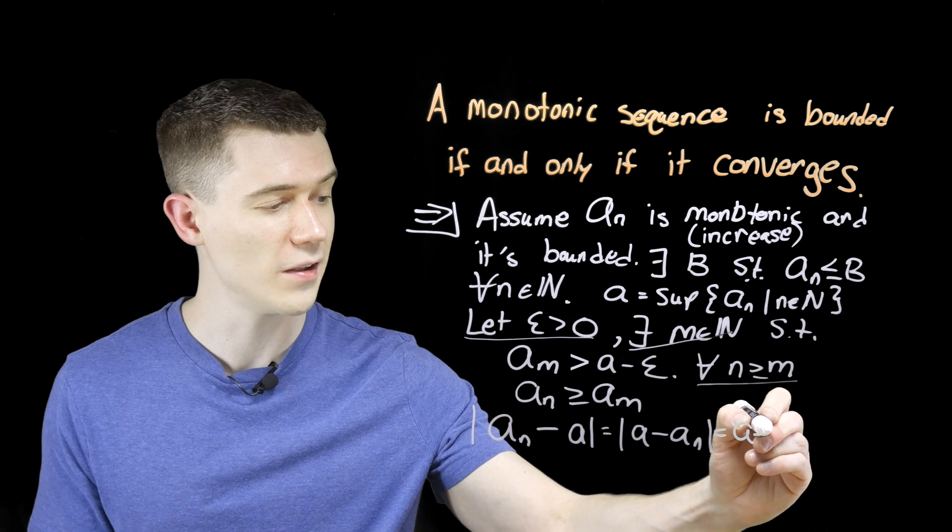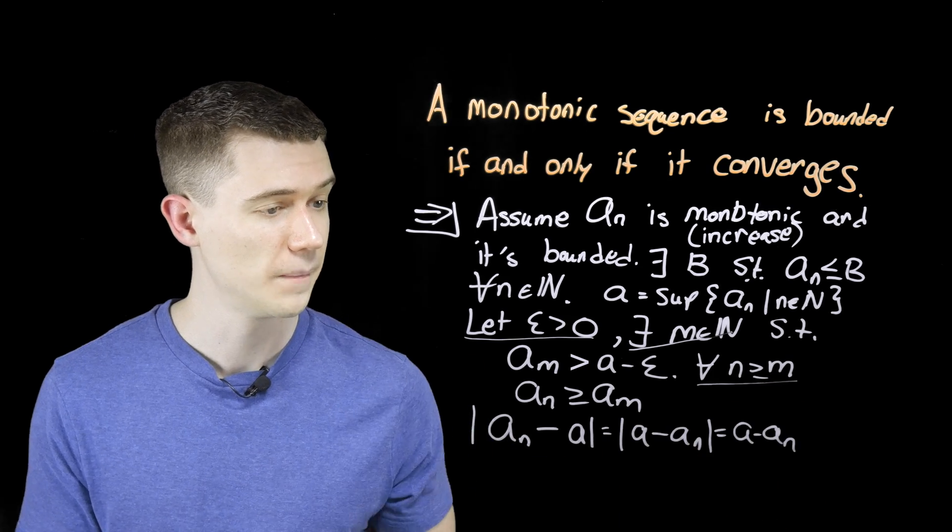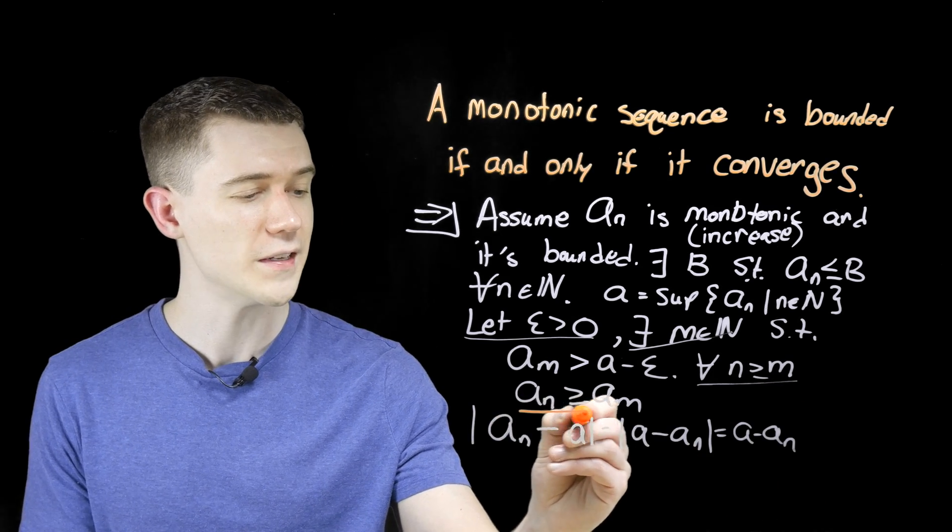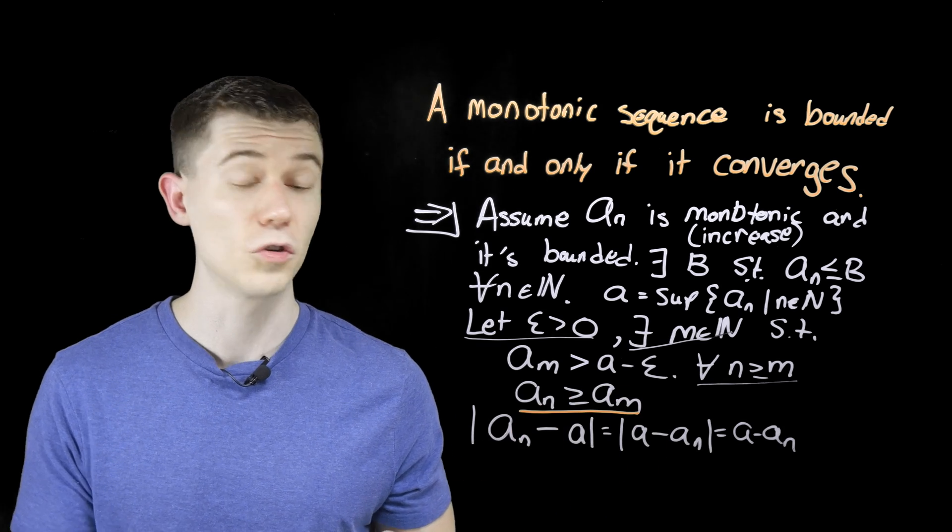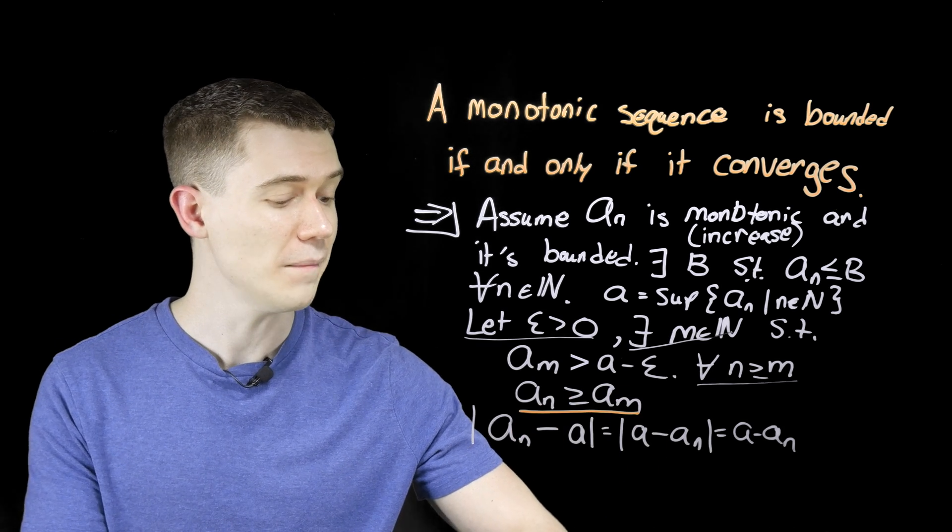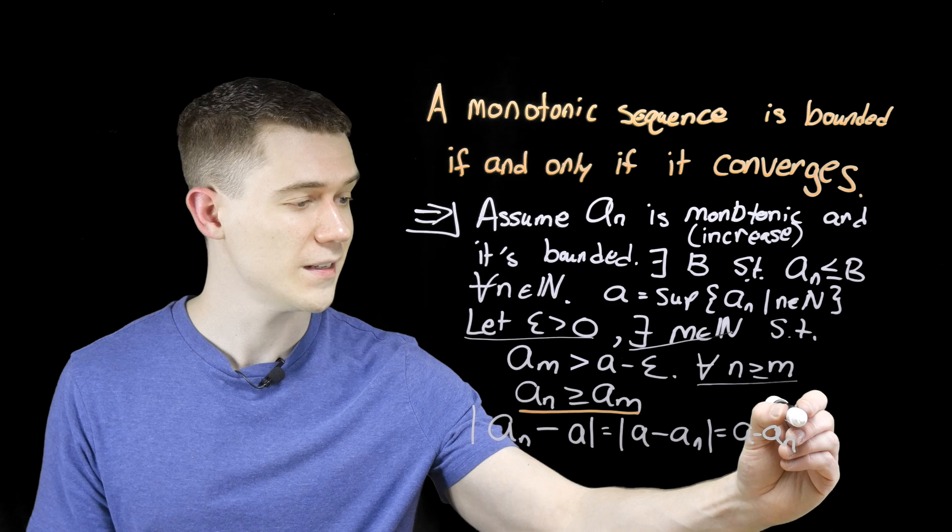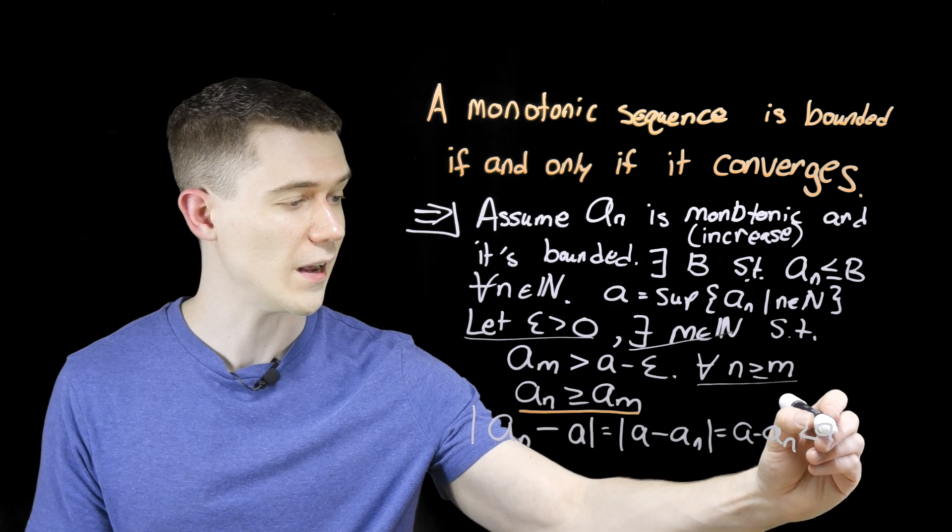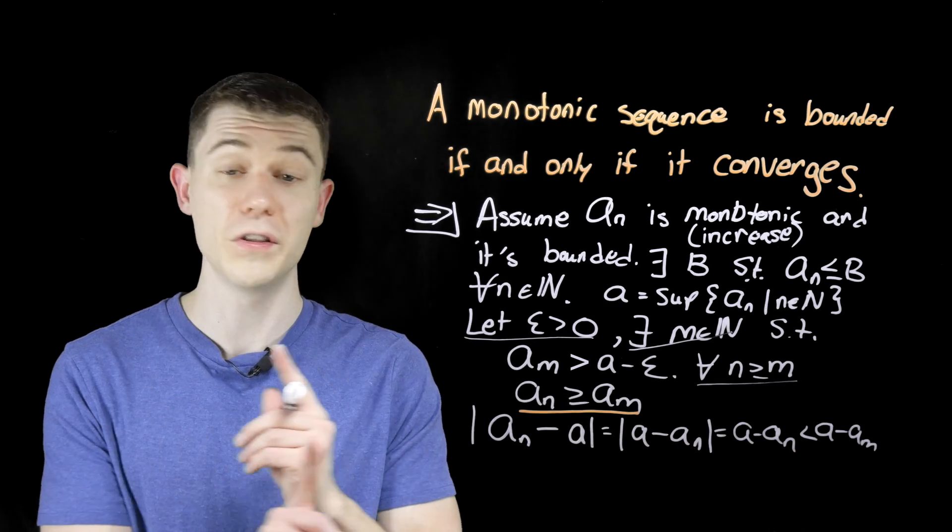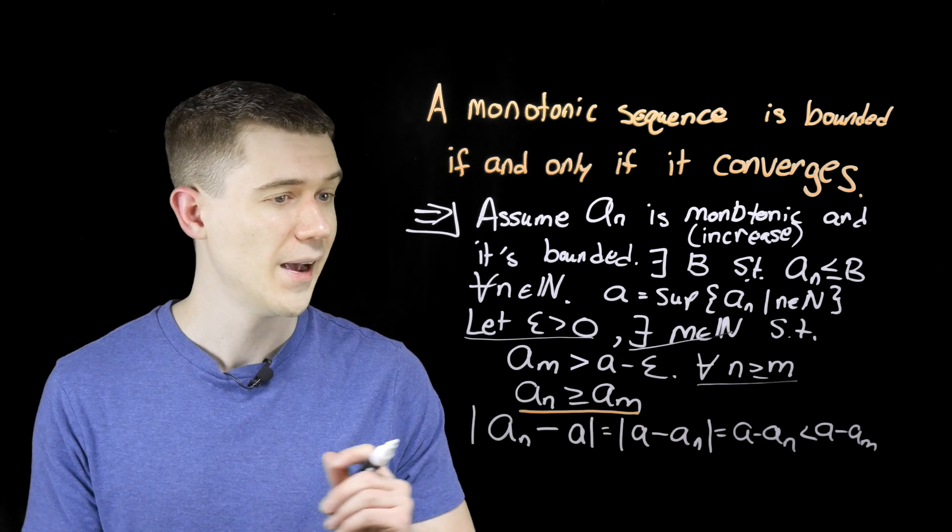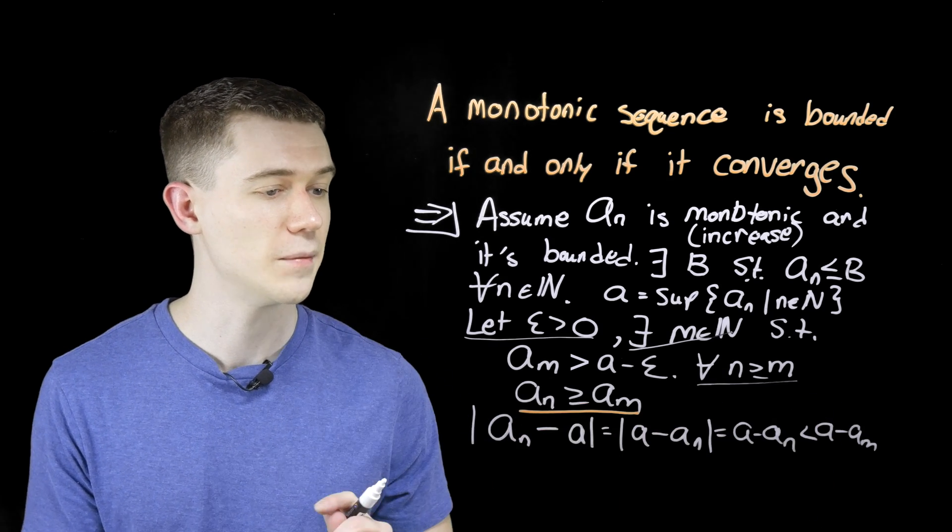I don't need these absolute values if it's going to be positive, and from the fact that we are increasing a sub n greater than a sub m, that must mean that this has to be less than a minus a sub m. The inequality sign would go the other way if I'm subtracting them, and what's a minus a sub m?